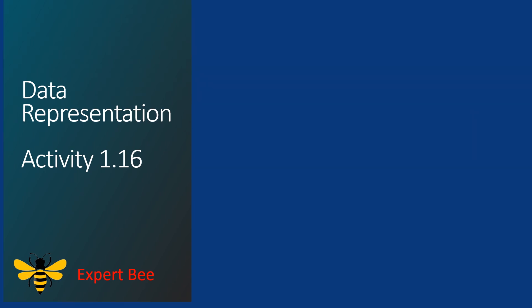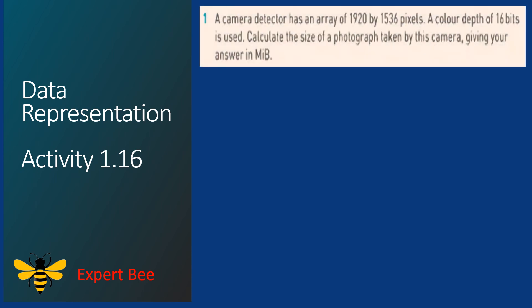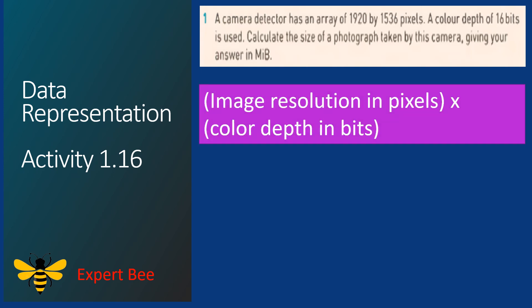Now let us solve Question 1. A camera detector has an array of 1920 by 1536 pixels. A color depth of 16 bits is used. Calculate the size of a photograph taken by this camera, giving your answer in megabytes. To solve this question we will use the formula: image resolution in pixels multiplied with color depth in bits.